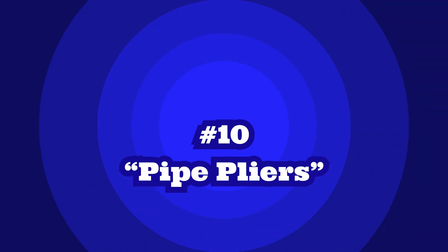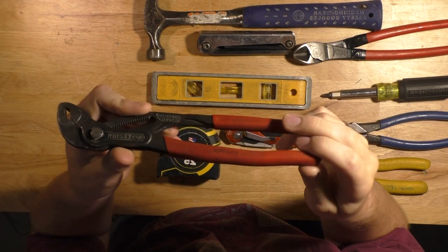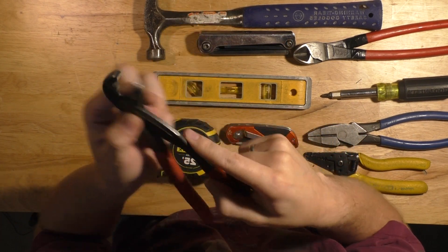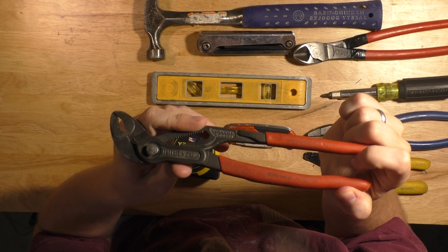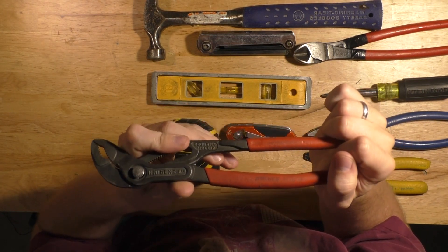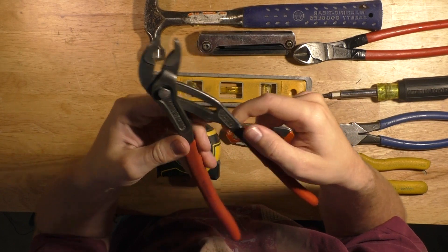Big number ten is going to be the tongue and groove pliers, sometimes called pipe pliers. This will come in handy for nuts and bolts, opening various things, connecting different kinds of fittings, any kind of pipe work. Similar to the tape measure, for my money the only pipe wrench on the market is the Knipex Cobra.